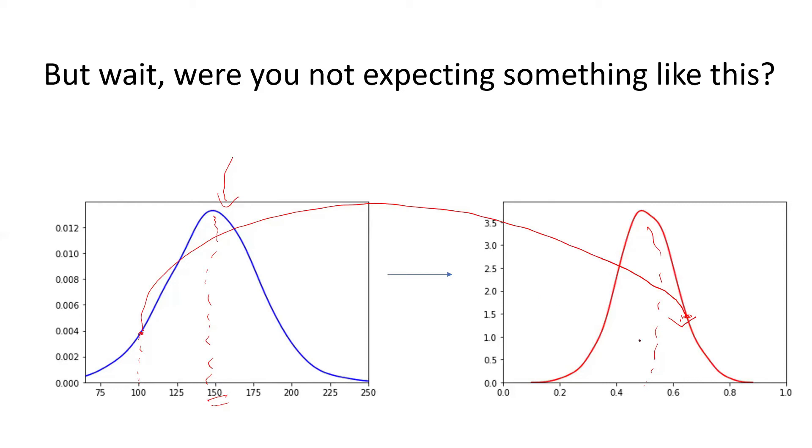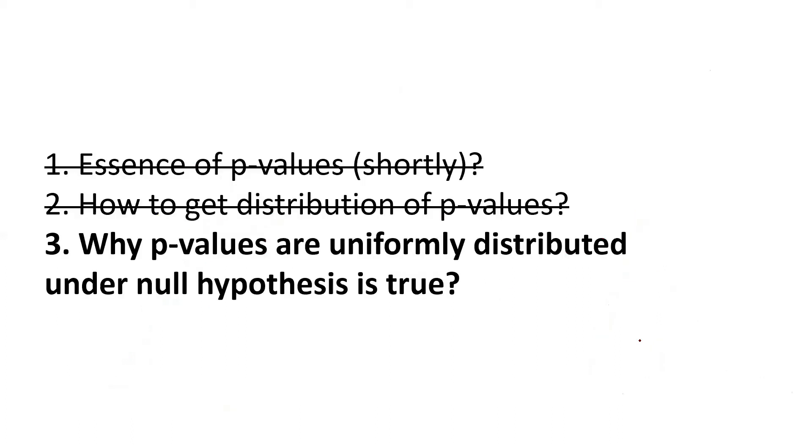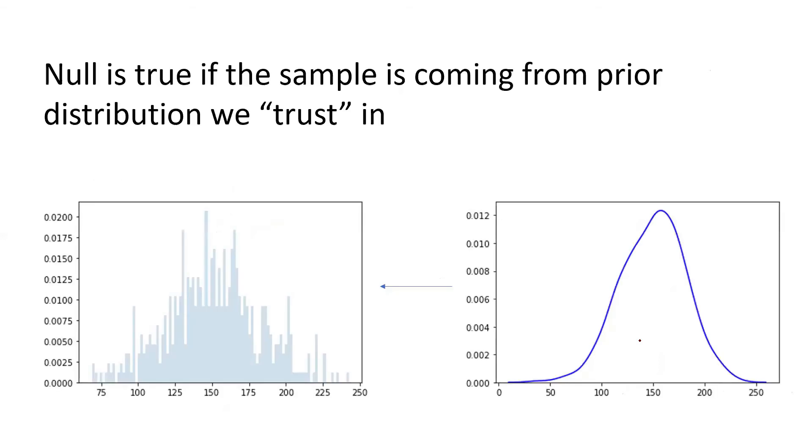So from my point of view, in this question, this is the main logical trap that you might come into. And now our aim is to understand why it is just a trap. And why in fact, p-values are uniformly distributed under null hypothesis is true for any distribution. So you take any distribution, and its p-values would be uniformly distributed. So let us take a look.